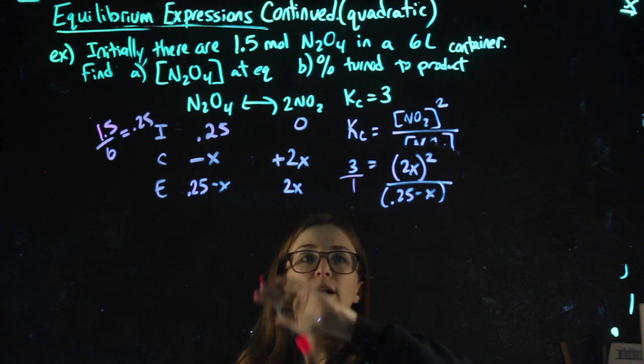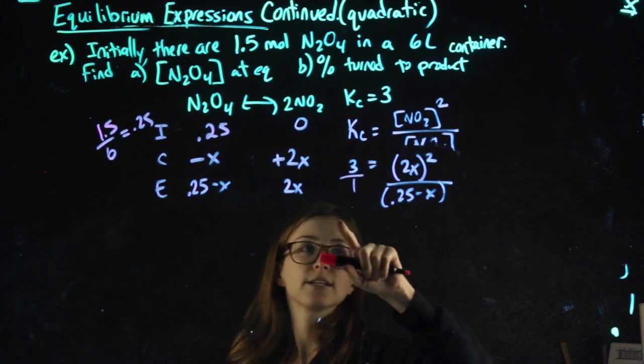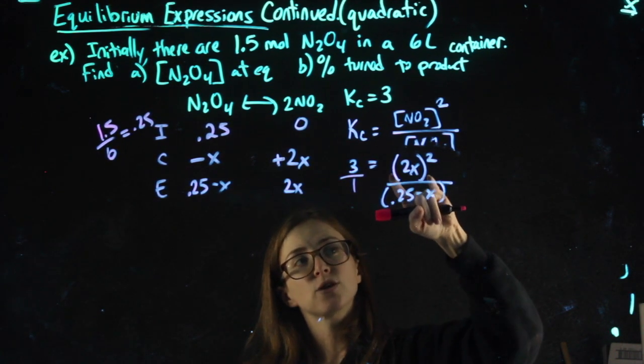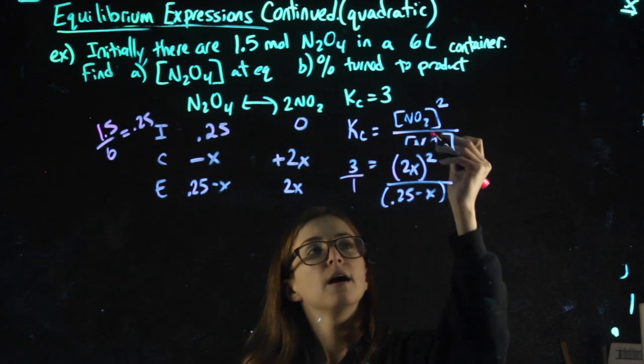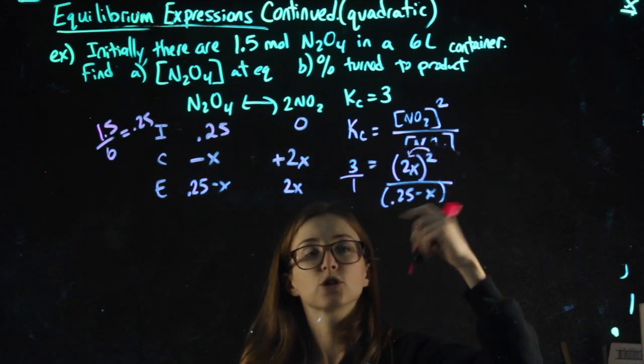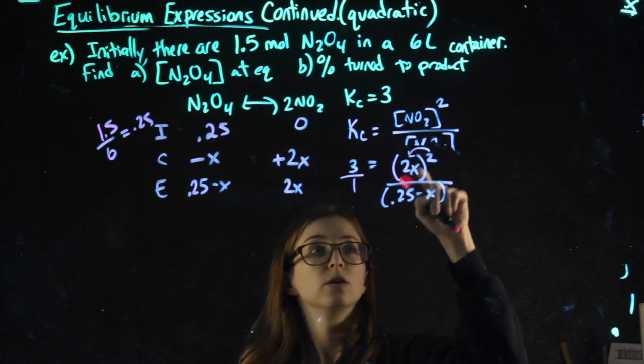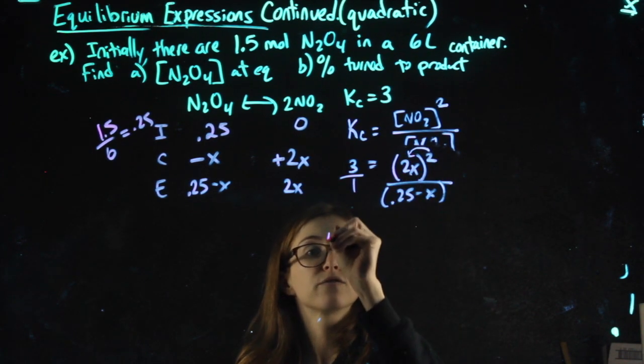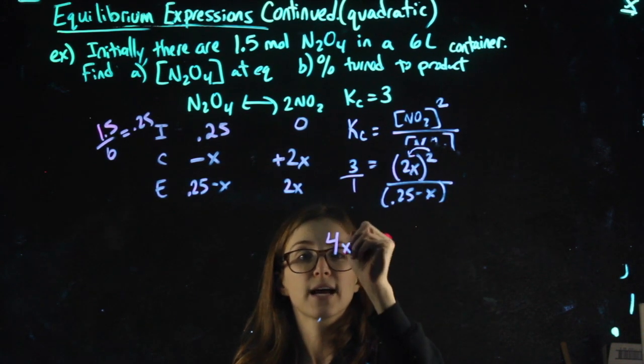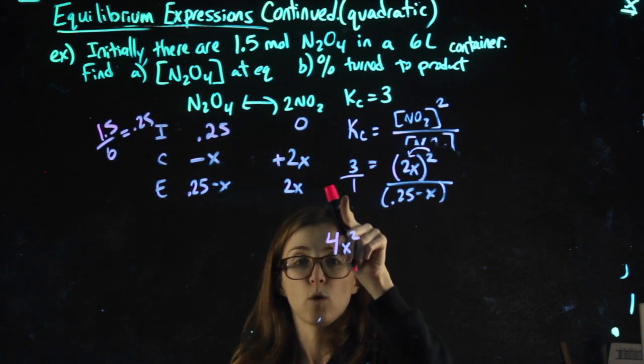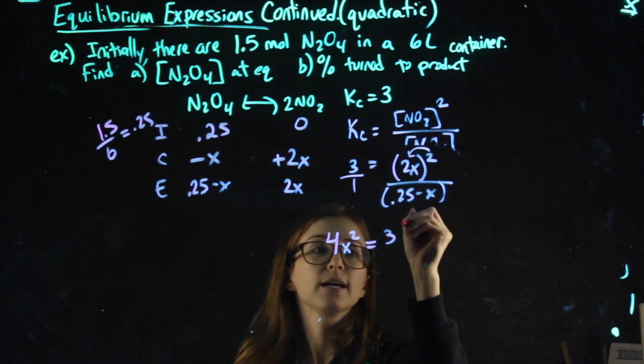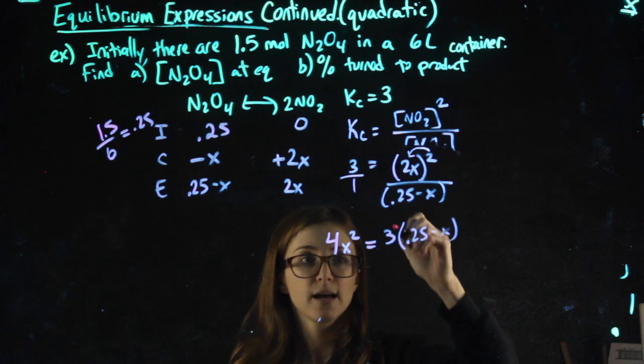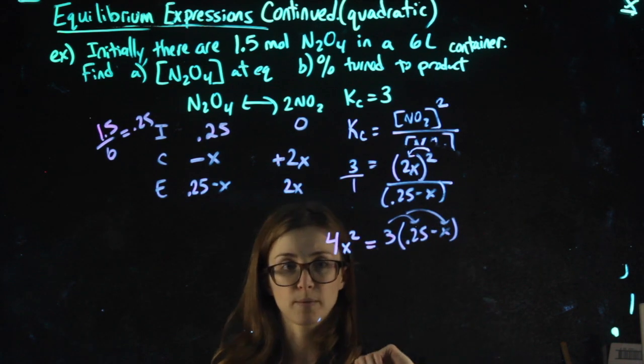I can always put over 1 and cross multiply, which is a good idea to start. The reason I stress these parentheses, that all of NO2 is squared, is because people forget that the square also goes to the 2. So 2 squared is 4, x squared is x squared, times 1 cross multiply equals 3 times 0.25 minus x, and this 3 I will have to distribute.